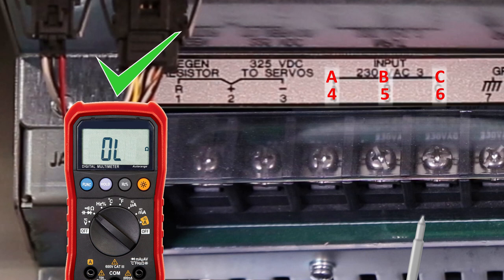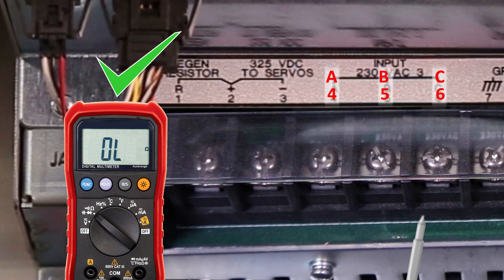If it shows open, the bridge rectifier is good. A low resistance reading indicates the bridge rectifier has failed and that the vector drive needs to be replaced.